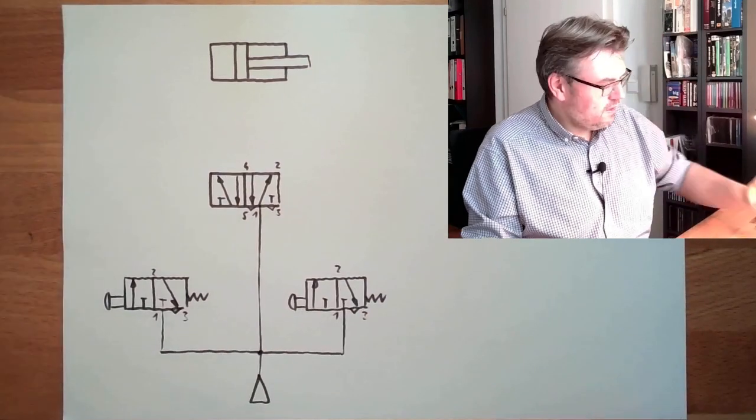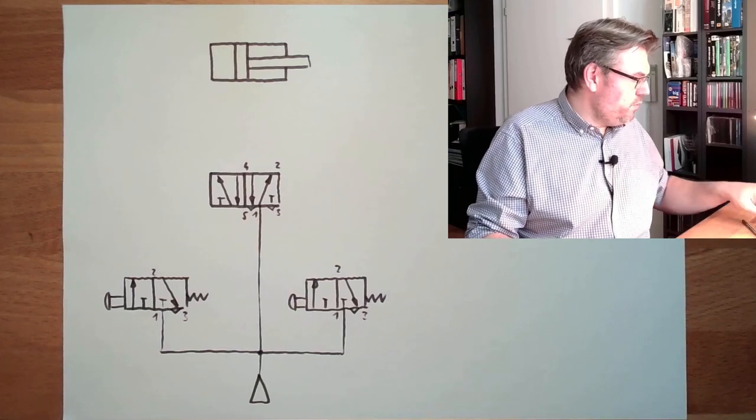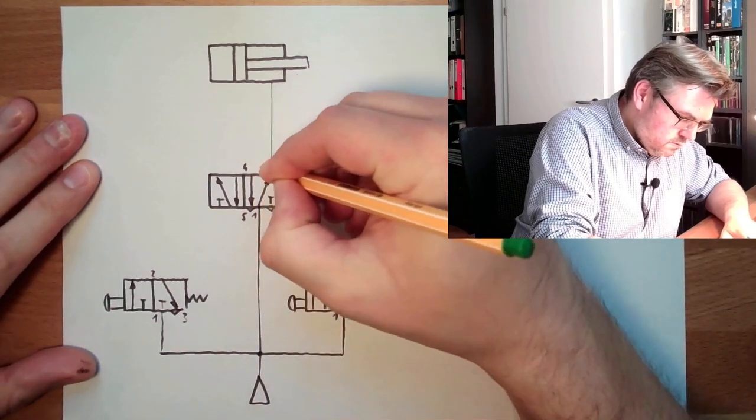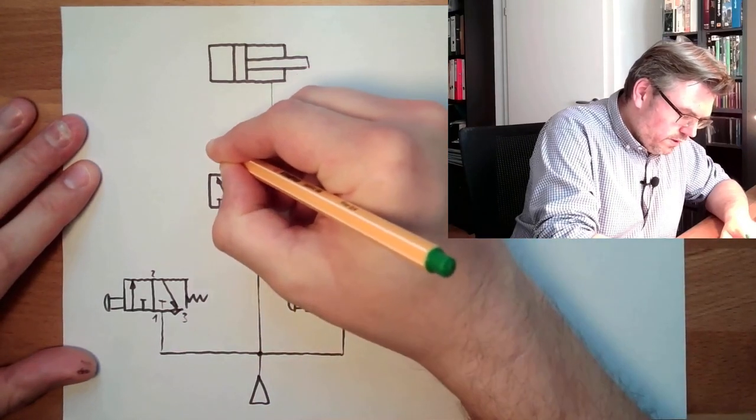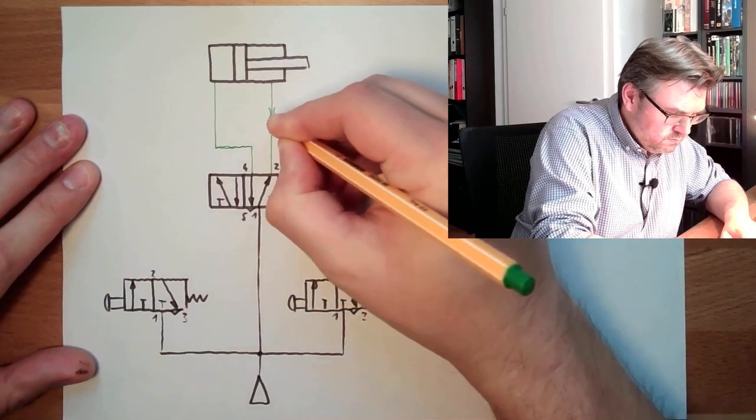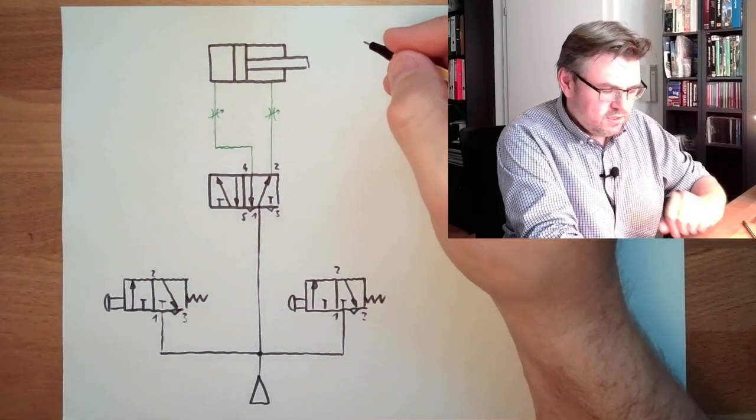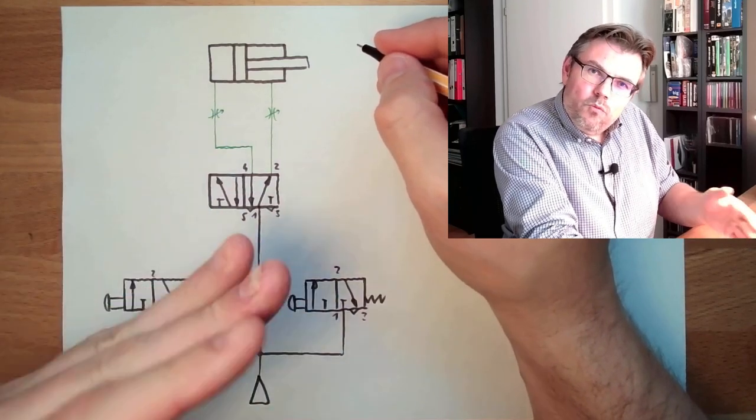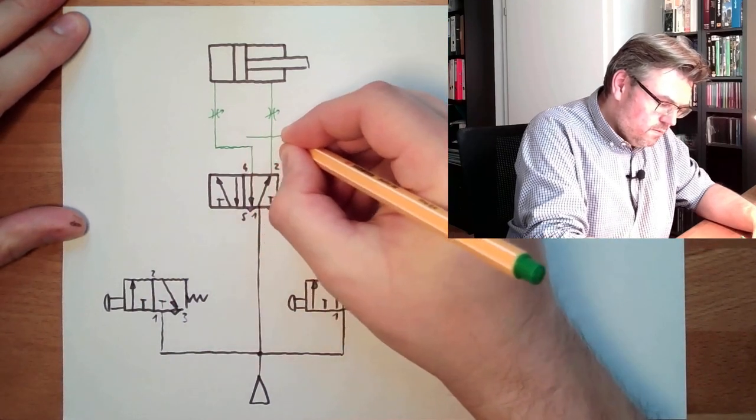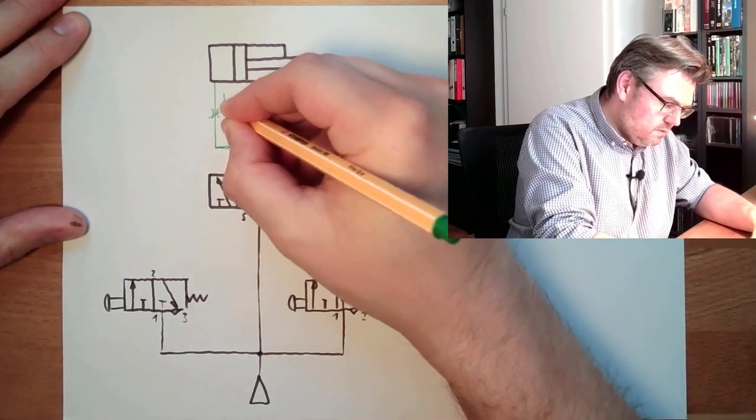Now we said we want to select the speed. So we have to put in here, not only going directly to the cylinder, but we have to put in a throttle. Since I want to adjust the speed with one throttle for outwards and one throttle for inwards, I will use a throttle check valve. Two throttle check valves here.